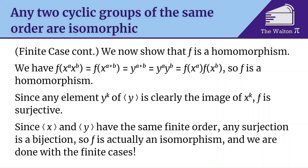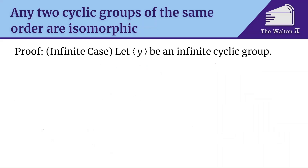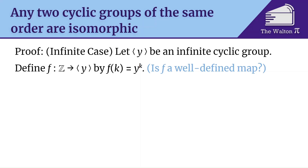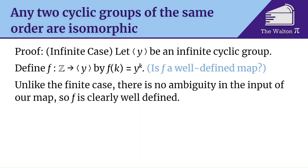Now let's move on to the infinite case. Let y be an infinite cyclic group. We define our function f from Z to the group generated by y by f of k equals y to the k. Is this a well-defined map? Unlike the finite case, there's no ambiguity in the input — we had x to the 3 equals x to the 10 in the cyclic group of order 7, but here different integers are always different. So f is always going to be well-defined.